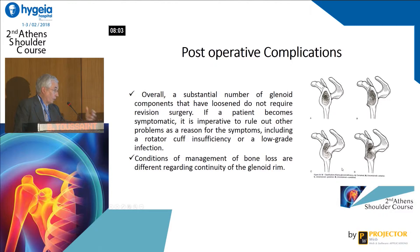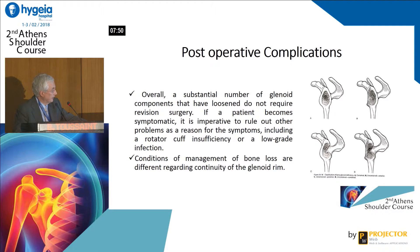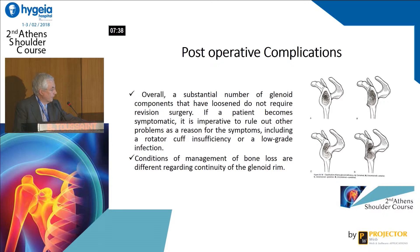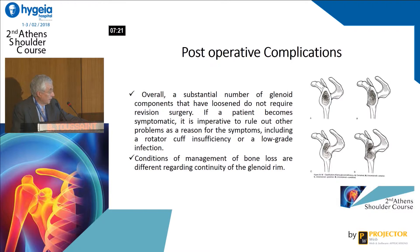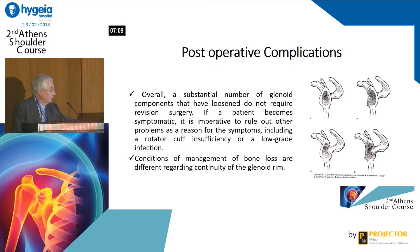When you need to revise the glenoid component, it's very important to understand the indication — certainly when the patient becomes symptomatic with pain and decreased range of motion. It's very important to check why. It's not only glenoid component loosening; you need to search for rotator cuff insufficiency and check for low-grade infection, as demonstrated just before.